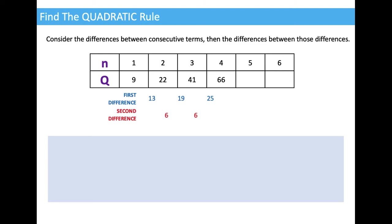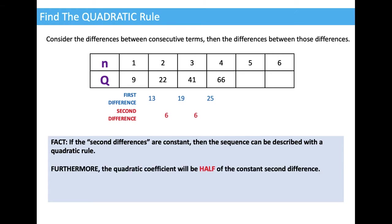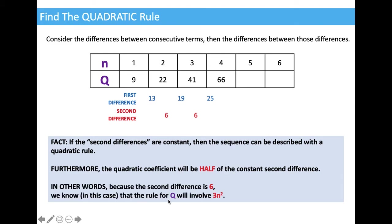There's our original table again, taking out the predictions I made. It is a fact that if the second difference is constant, then the sequence can be described with a quadratic rule — that's always true. Furthermore, the quadratic coefficient will be half of the constant second difference. The constant second difference here is 6, so that tells us the rule for Q will involve 3n squared — because 3 is half of 6. That will always be true whatever the constant second difference happens to be.